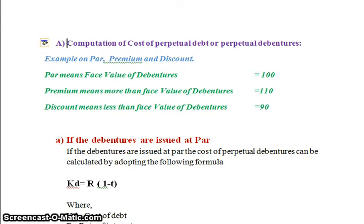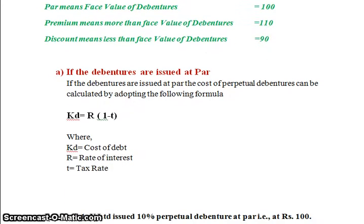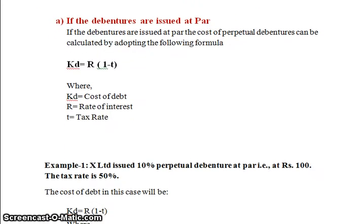Now let us understand the formula. If the debentures are issued at par, the cost of perpetual debentures can be calculated by the following formula: KD = R × (1 − T), where KD is the cost of debt, R is the rate of interest, and T is the tax rate. This formula applies when debentures are issued at par.